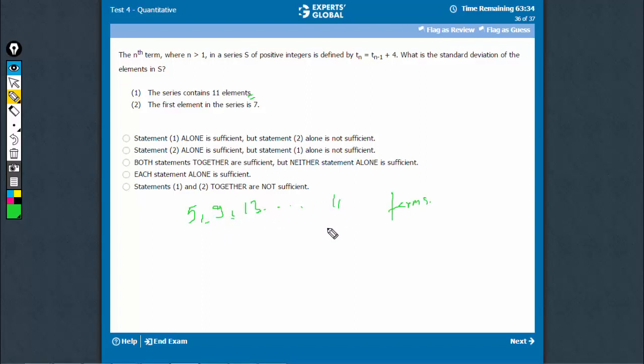the standard deviation can be determined. You don't actually have to know the exact terms, even if this were 35, 39, 43, 11 terms in this series, the standard deviation would be the same because standard deviation is about what is the difference between the terms, it's not about what the terms are.